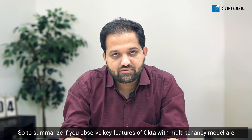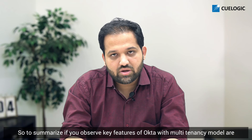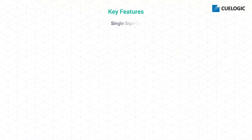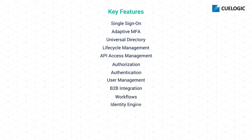To summarize, the key features of Okta with the multi-tenancy model include: single sign-on, adaptive MFA, universal directory, lifecycle management, API access management, authorization, authentication, user management, B2B integration, workflows, identity engine, devices, directories, integrations, and many more.